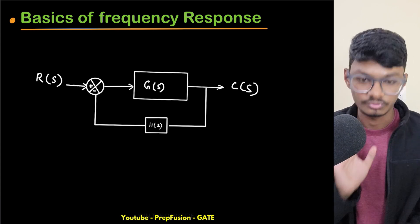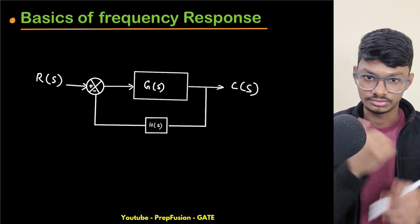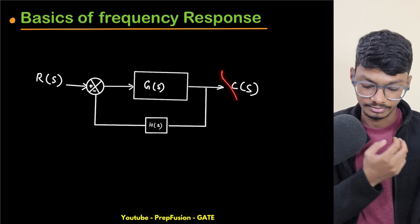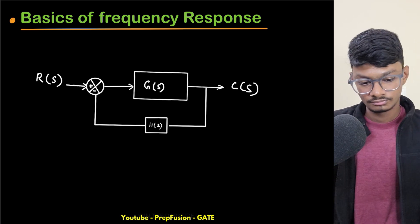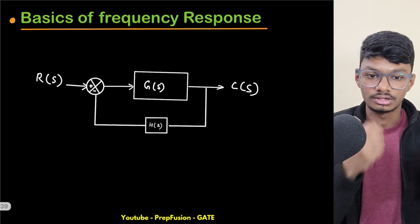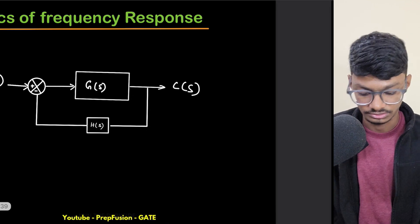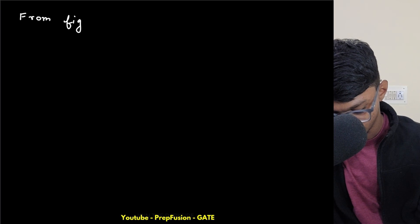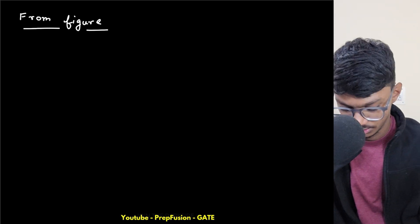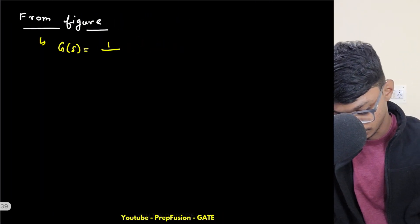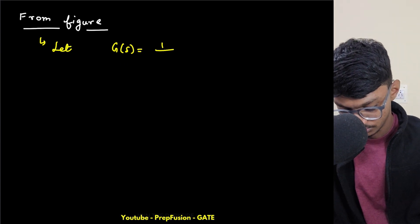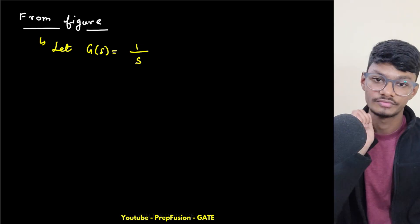Until now, to study frequency response, we have a closed-loop system. We give a sinusoidal input of some frequency ω, vary that frequency, and measure the output. For an LTI system the output is also a sinusoid of the same frequency but with different amplitude and phase. Let me write down the transfer function. From the figure, let G(s) = 1/s.